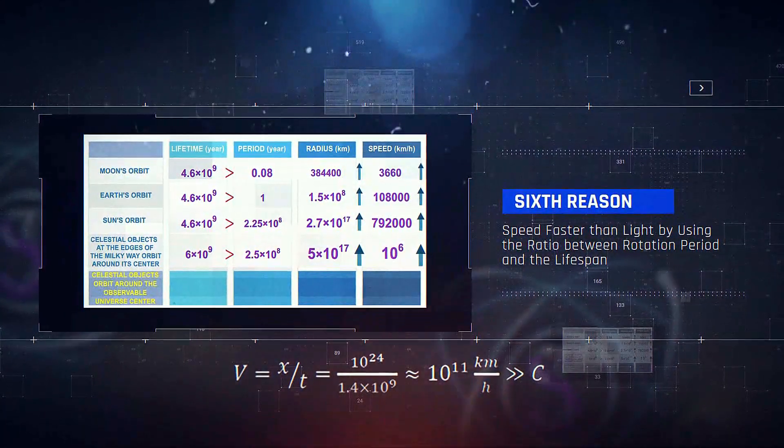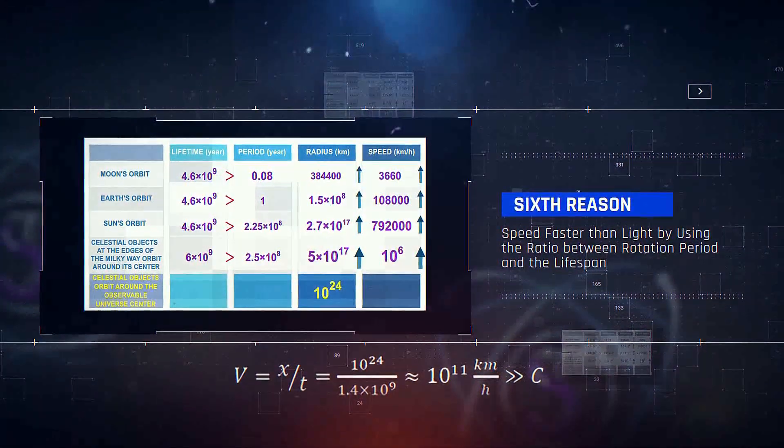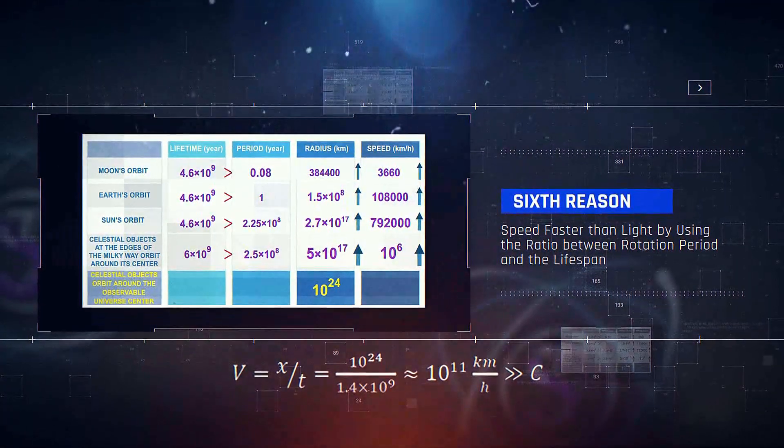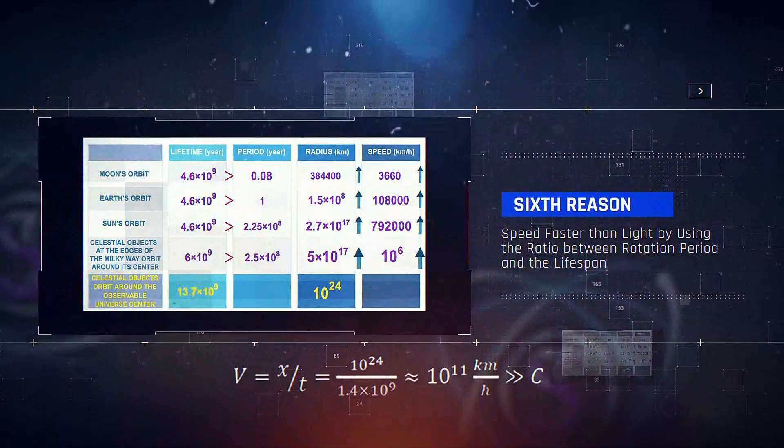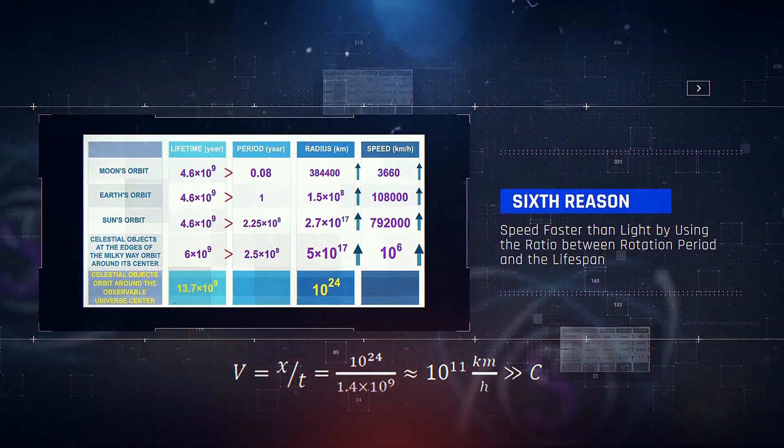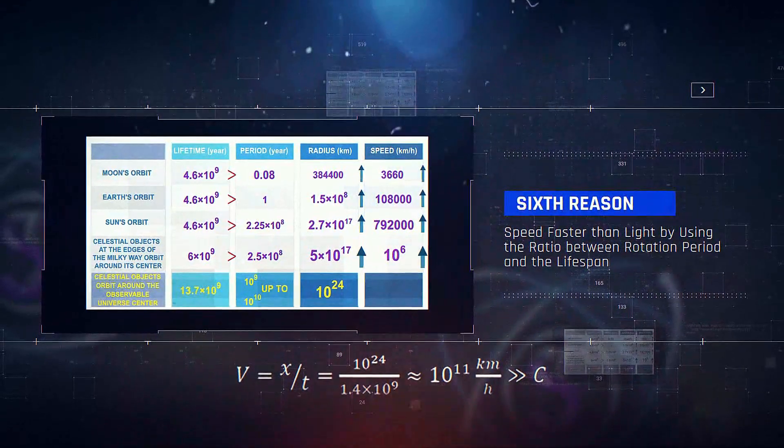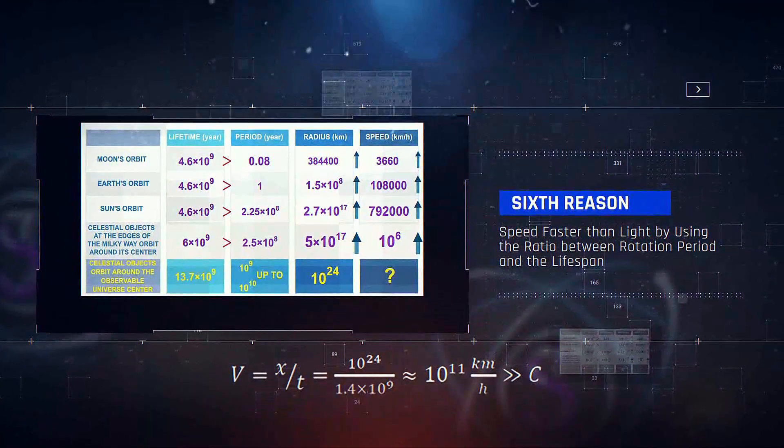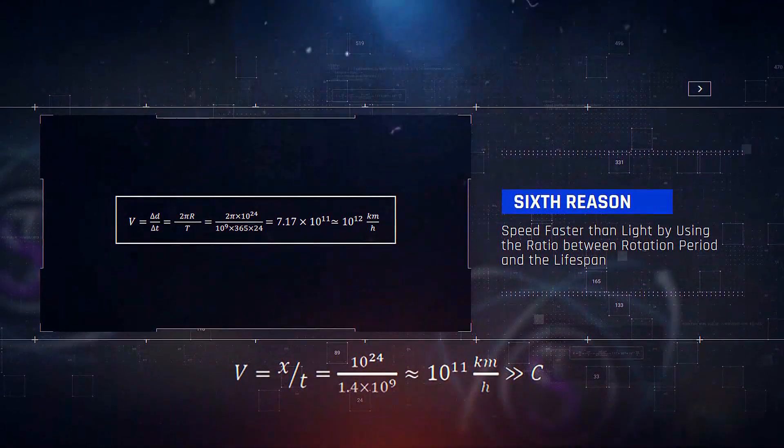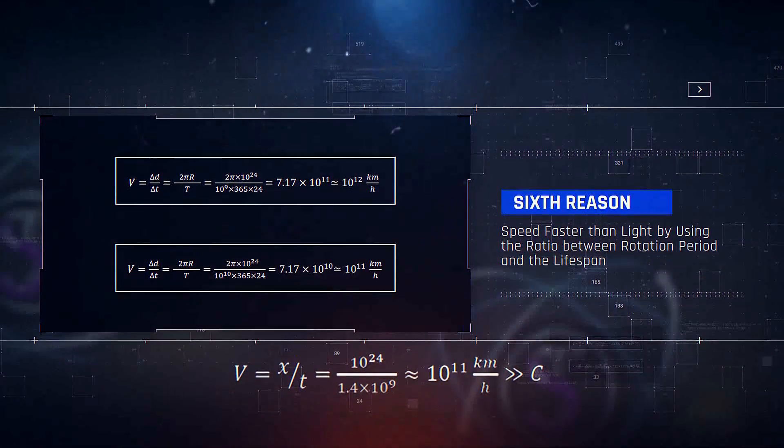If we assume the rotation period of the universe is one-tenth of its lifespan, for example 1.4 billion years, and the radius of the universe is 10 to the power of 24 km, then using the simple formula V = d/t, the speed of galaxies at this distance will exceed the speed of light.